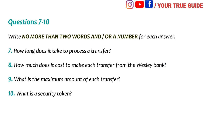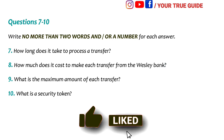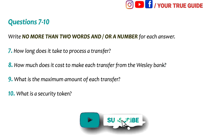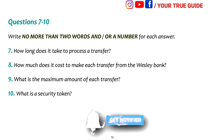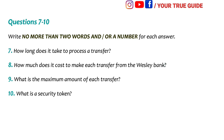Before you hear the rest of the conversation, you have some time to look at questions 7 to 10. Now listen and answer questions 7 to 10. When can my family expect the money? Will they get it within the next 5 days? It takes 3 days to process but, of course, we can't be responsible for any delays arising from the recipient bank. I understand.